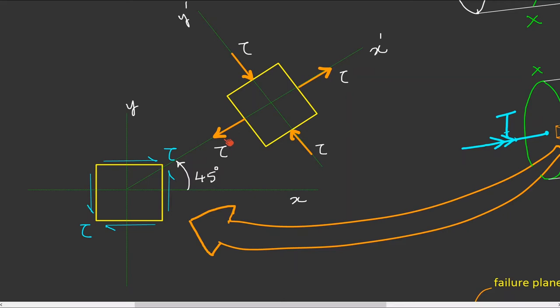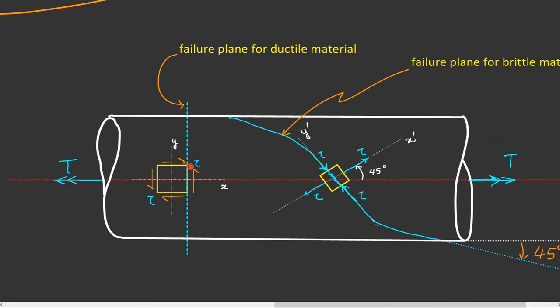In summary, an element on a shaft subjected to pure torque is under pure shear. At that very same point, if the axis is rotated by 45 degrees, the element is now subjected to a pair of tensile stresses and a pair of compressive stresses whose numerical magnitudes are exactly the same as the original shear stress acting on the original stress element.